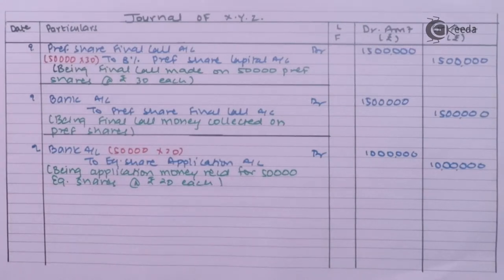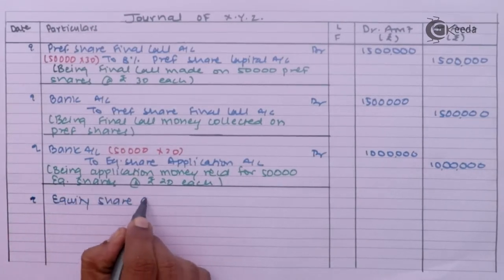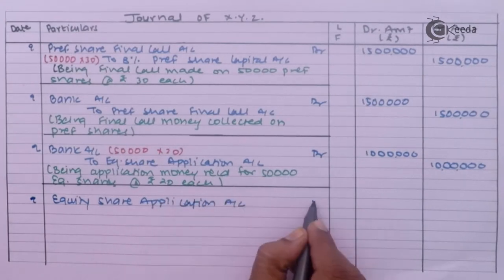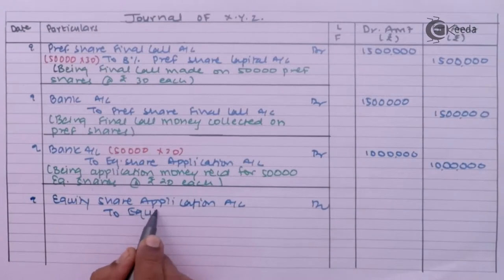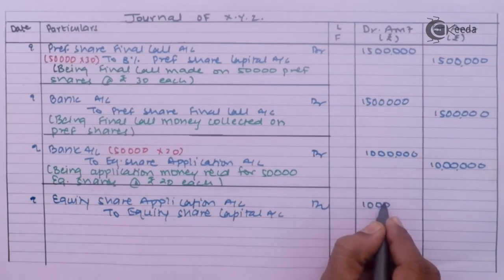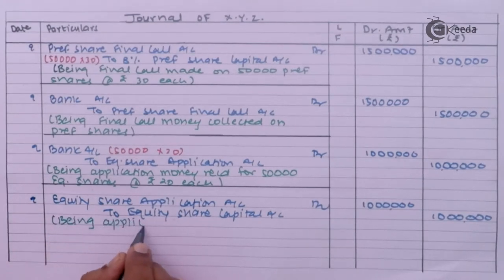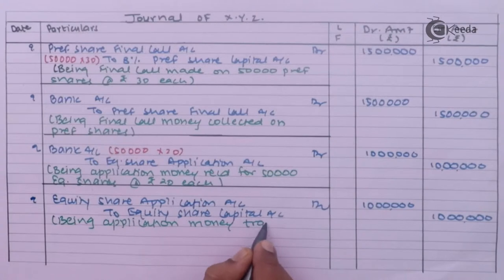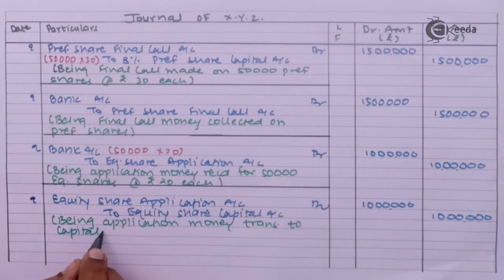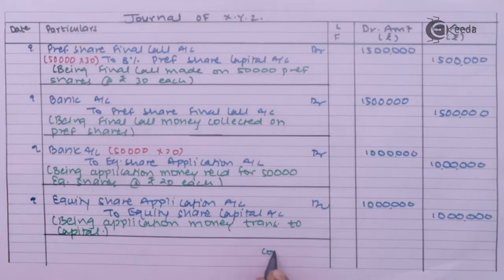Application money received for 50,000 equity shares at Rs 20 each. Entry: bank account debit to equity share application account. This application money is then transferred to capital. Entry: equity share application account debit to equity share capital account — being equity share application money transferred to equity share capital account.